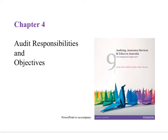Welcome to our third topic from chapter 4. Today I only have 29 slides, but I'm going to go through them in quite significant detail. We're going to learn about what the auditor is responsible for, the objectives of the audit, and how we determine whether accounts are actually true and fair. We'll also come across a key word called assertions, which will be a foundational piece of knowledge for the rest of the course.